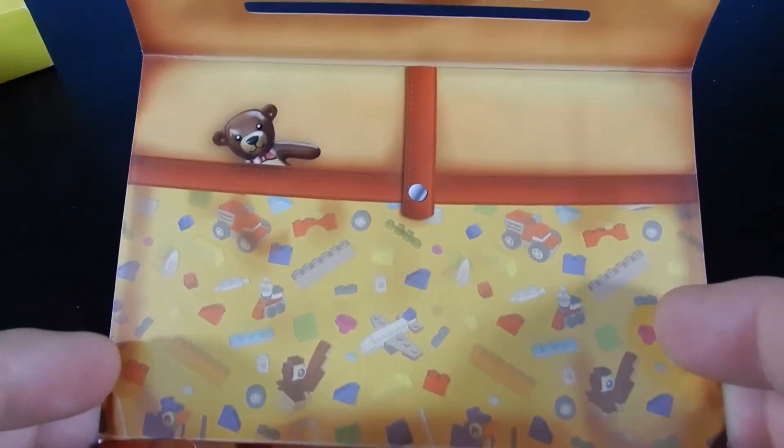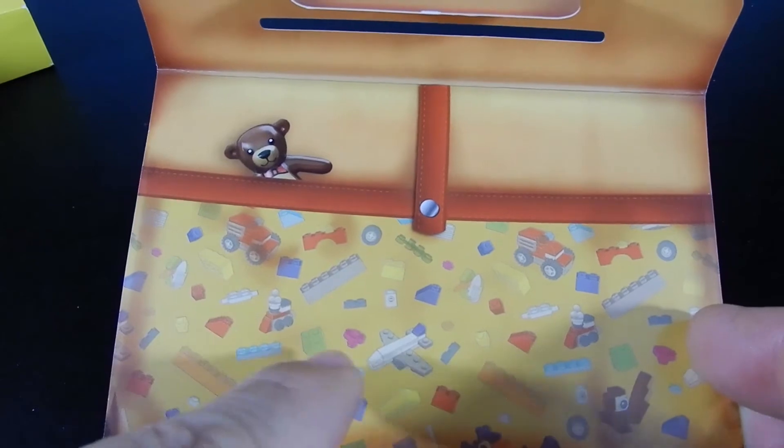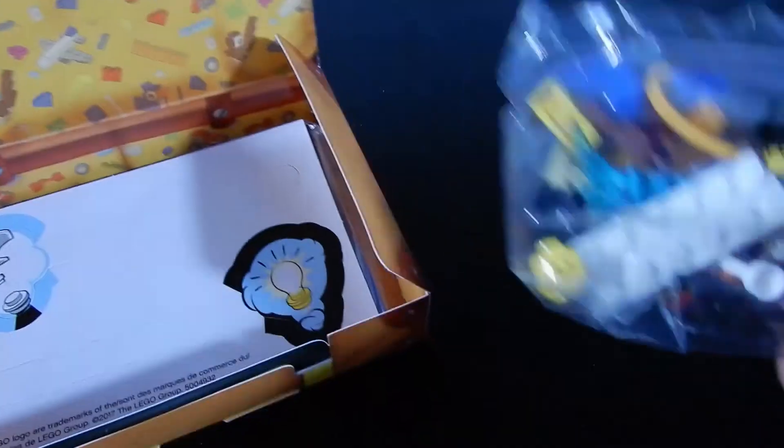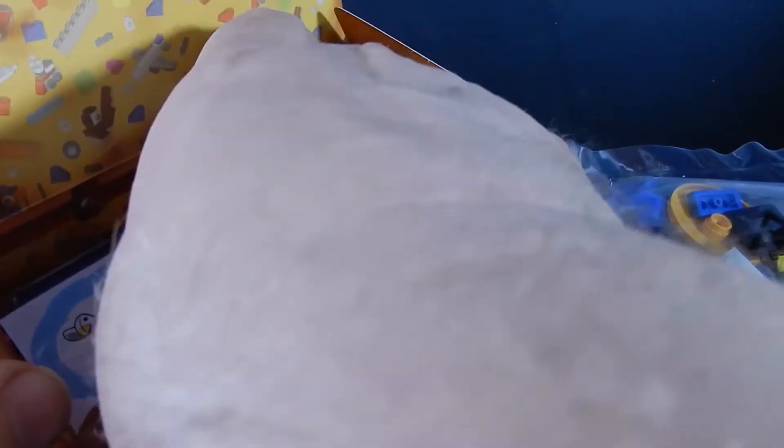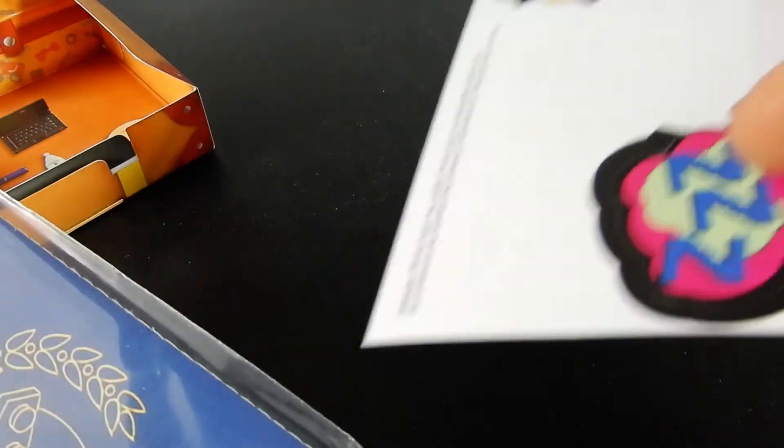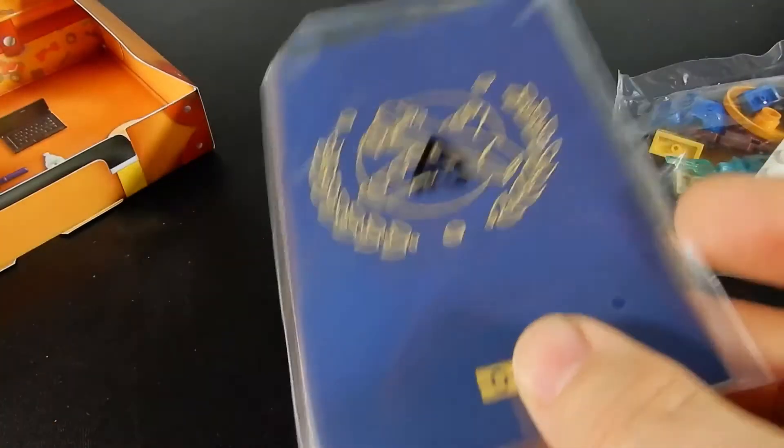We have some Lego bricks and little builds and things, a little Lego teddy bear. And then inside we have a bag of parts and some sticker type things. And it looks like a passport. So let's take a closer look at all of that.